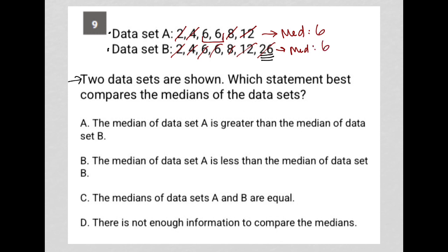So the medians should be the exact same. Choice A says the median of data set A is greater than. No. B, the median of data set A is less than. Absolutely not. C, the medians of data sets A and B are equal. Yes, they are. That is the correct answer. Choice C is correct.